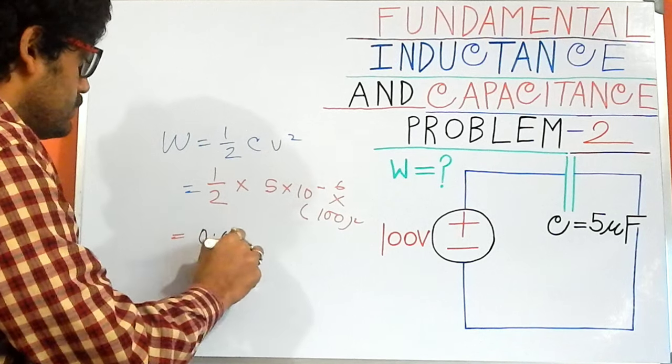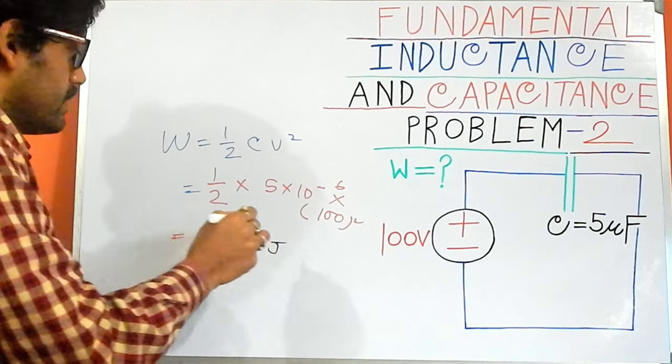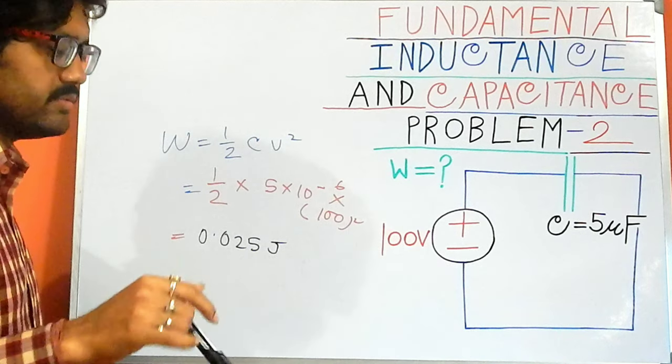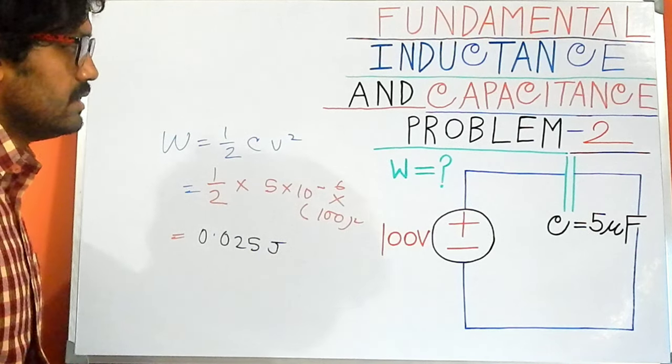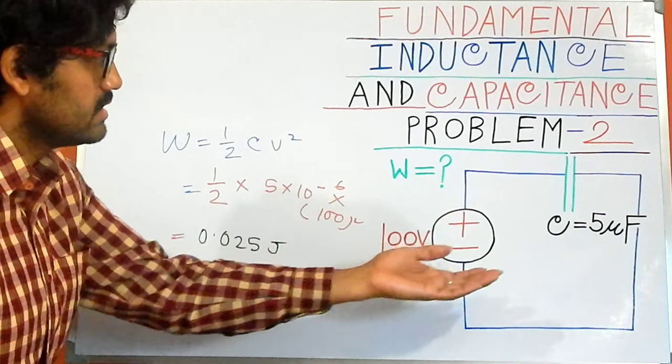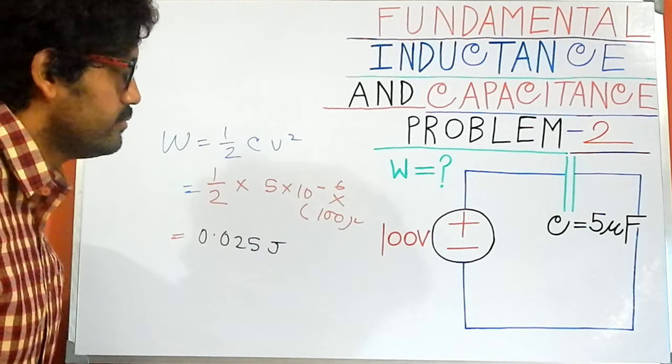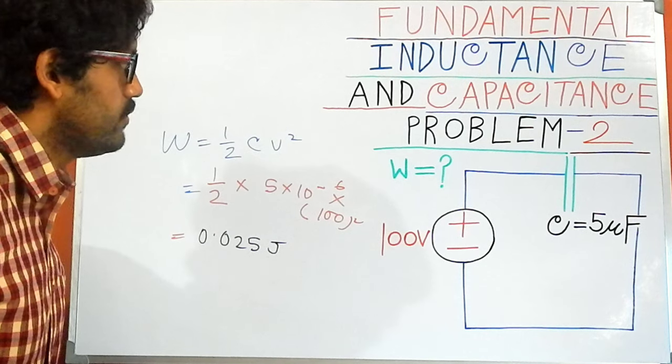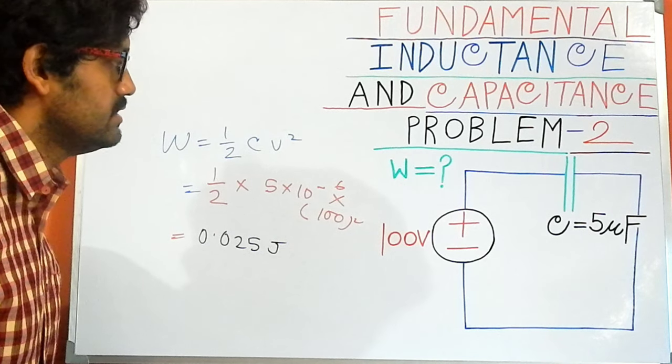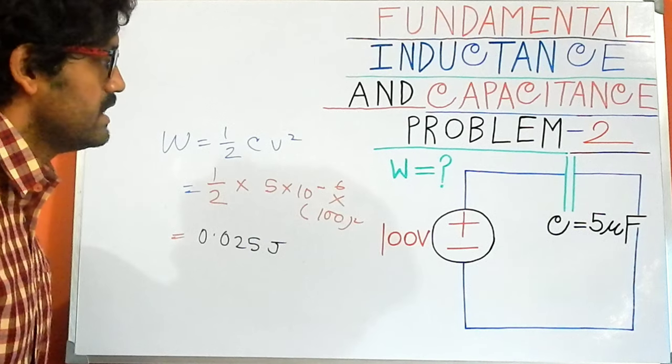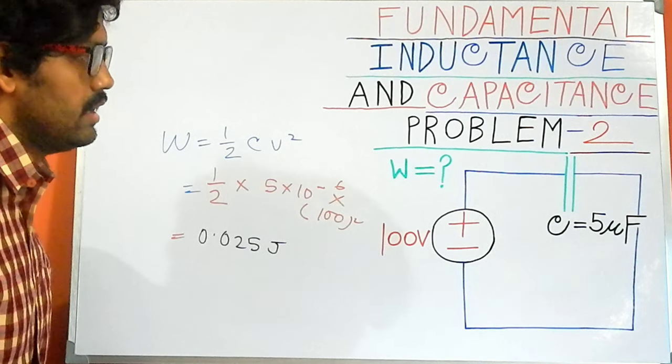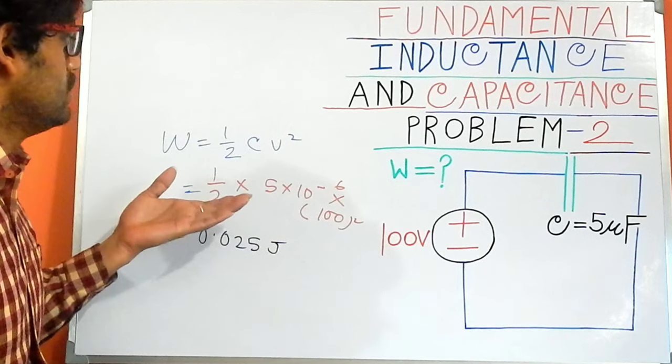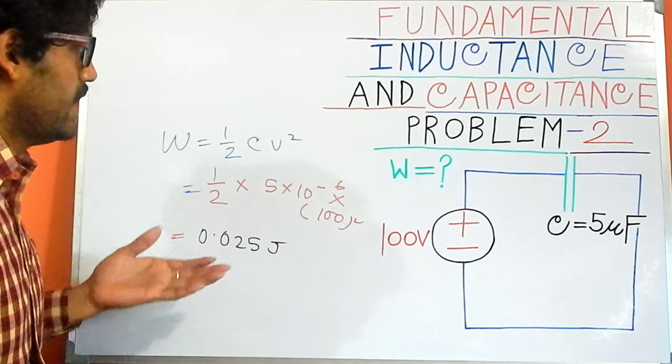I want to repeat this portion. I have chosen a very simple problem. The capacitor is connected with a 100-volt DC voltage source, and we need to find out the energy associated with our capacitor or energy across our capacitor.